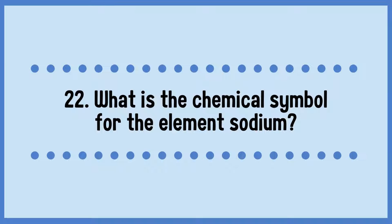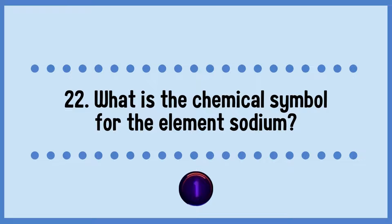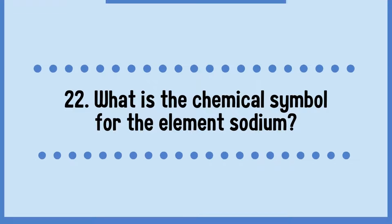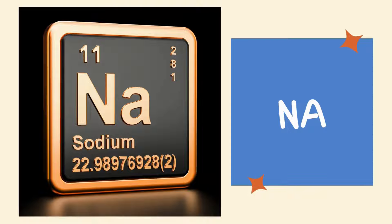What is the chemical symbol for the element sodium? The chemical symbol for the element sodium is Na.